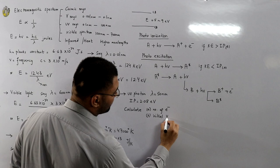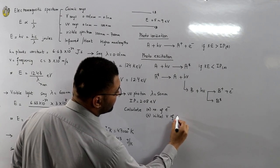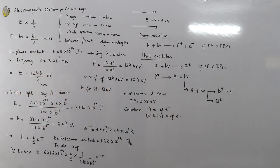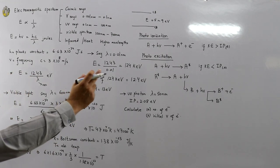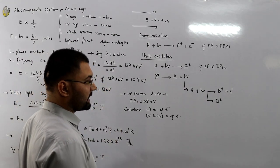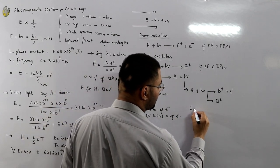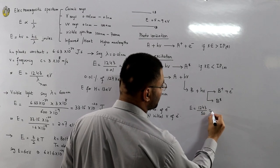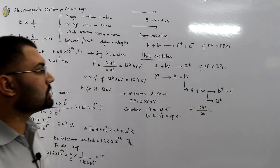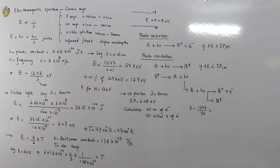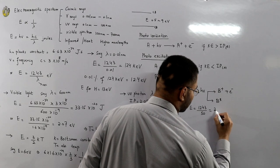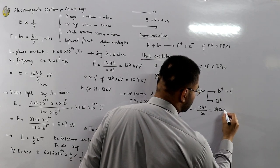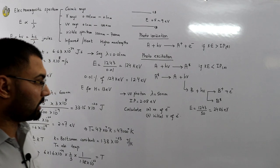Using the formula E = 1243 / λ, where λ is in nanometers, we get E = 1243 / 50 nanometers. This gives the energy of the photon as 24.86 electron volts. This is the total energy that the photon has.